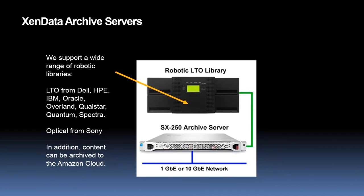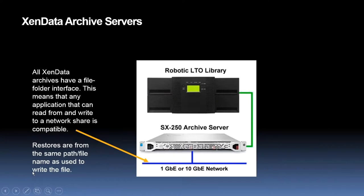Zendata's archive solutions are aimed at video applications — the vast majority of over a thousand installations are in feature entertainment or creative video. A Zendata system will archive to LTO, to optical disk archive from Sony, and we also support Amazon Cloud. We support a very wide range of robotic libraries — LTO libraries from Dell, HP, IBM, Oracle, Overland, Polestar, Quantum Spectra. All Zendata archives have a file folder interface, meaning any application that can write to or read from a network share is compatible.